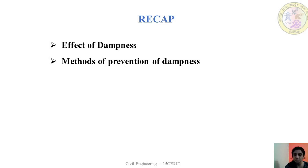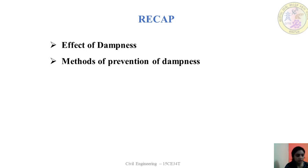The next method discussed was cavity wall. A cavity wall has two leaves — an inner wall and an outer wall — separated by a cavity or empty space. We also discussed the specifications for wall and cavity thickness, and the advantages of cavity walls such as insulation against heat and sound. It is also the most effective method of preventing dampness.